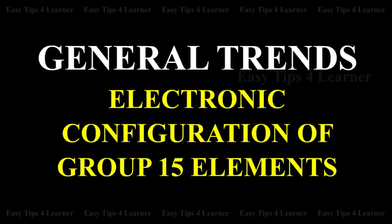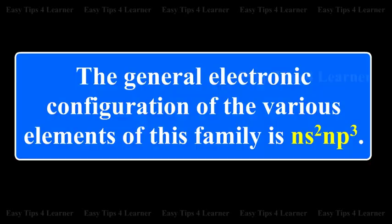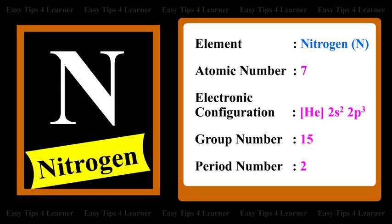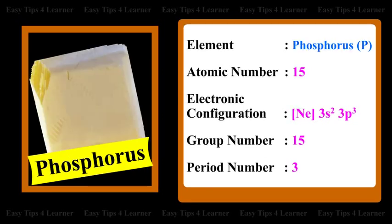General trends observed in the electronic configuration of Group 15 elements: the general electronic configuration of the various elements of this family is ns²np³. For the element nitrogen, the atomic number is 7 and the electronic configuration is 1s²2s²2p³. The group number is 15 and the period number is 2.